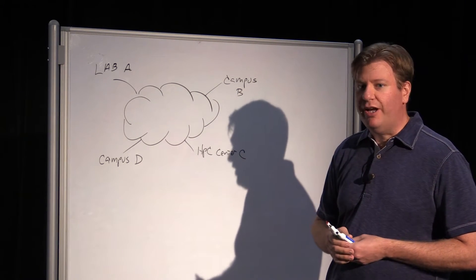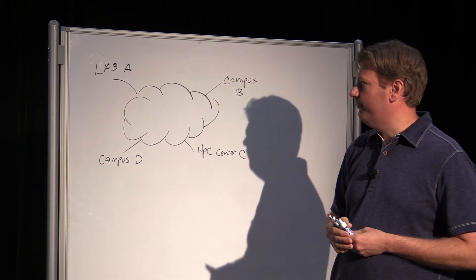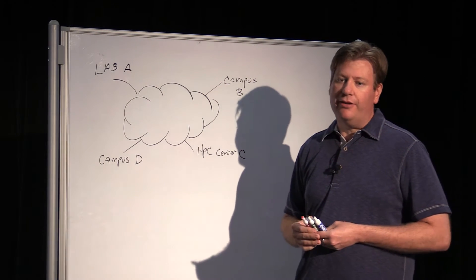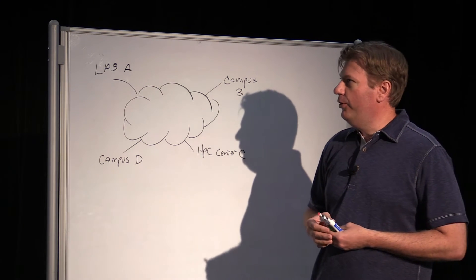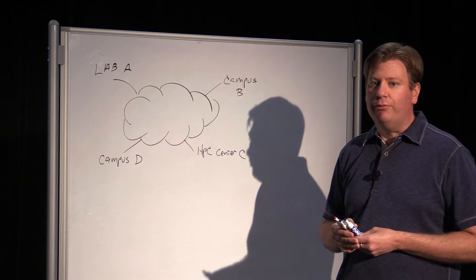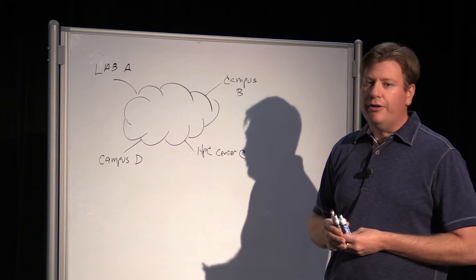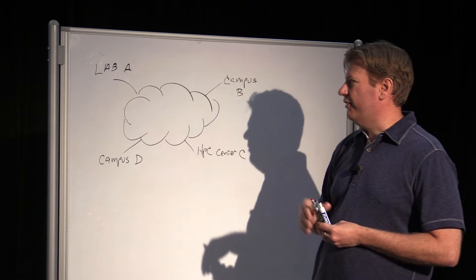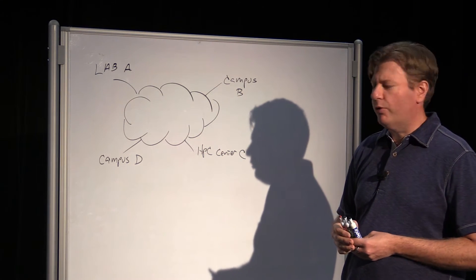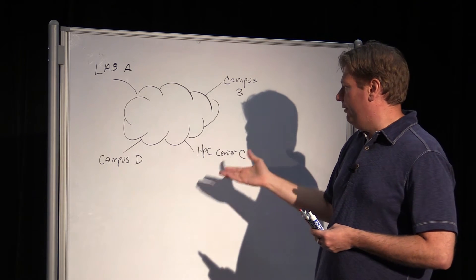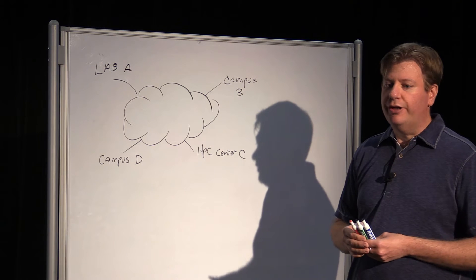We have a sample network diagram here that demonstrates this. We may have a laboratory called Lab A located at one end of the country that has the scientific instrumentation — maybe a microscope or something related to genomic sequencing. We have collaborators that may be at other campuses around the country, and they can either physically visit this laboratory or work remotely. And we may have high performance computing resources located at some different physical location.